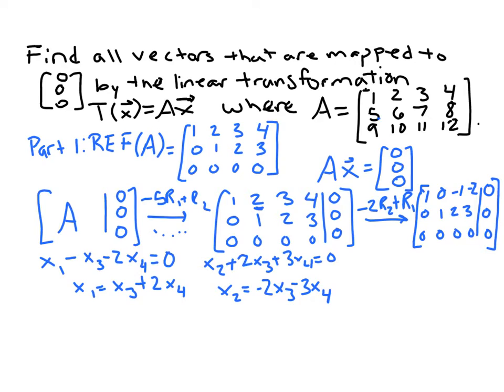So now we could describe all the solutions as: x1 is x3 plus 2x4, x2 is negative 2x3 minus 3x4, and x3 and x4 are our free variables.